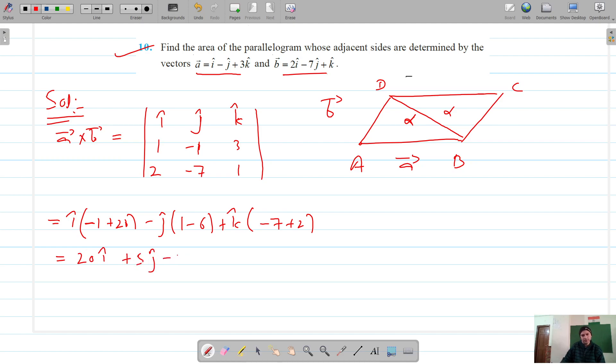The area of the parallelogram should be equal to the magnitude of a cross b.